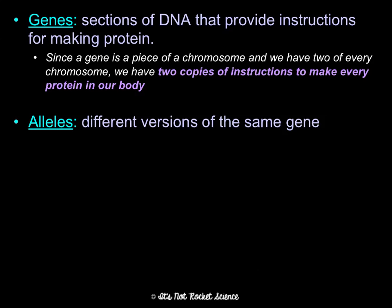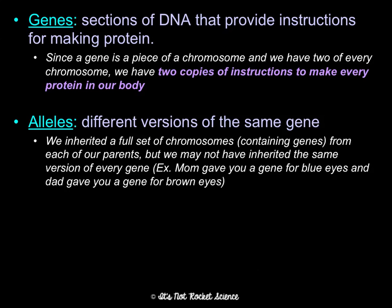Alleles are different versions of the same gene. We inherit a full set of chromosomes containing our genes from each of our parents, but we may not have inherited the same version of every gene. For example, you have a gene that determines your eye color, and you get two copies from your parents. Mom's allele may say blue eyes, and dad's allele may say brown. That's what we mean by alleles being different versions of a gene.